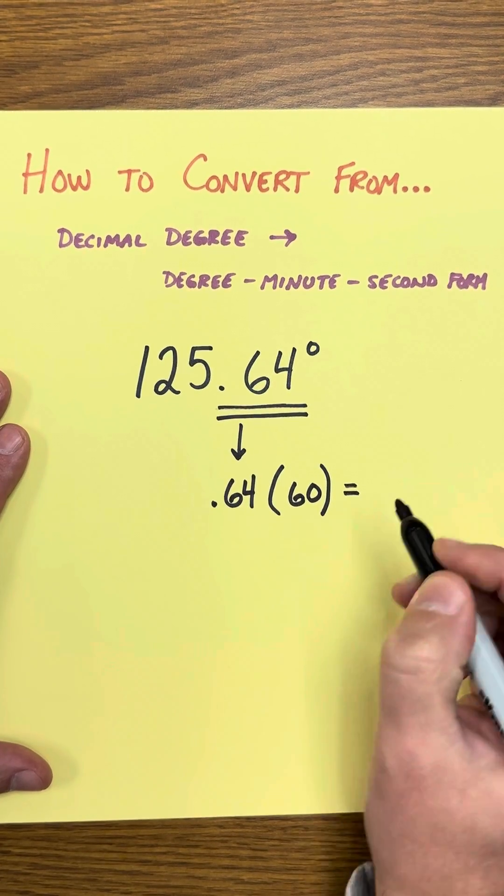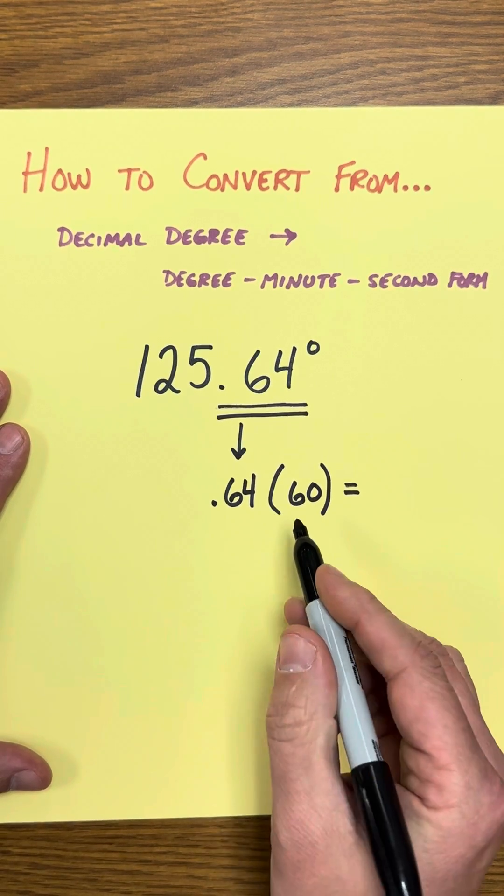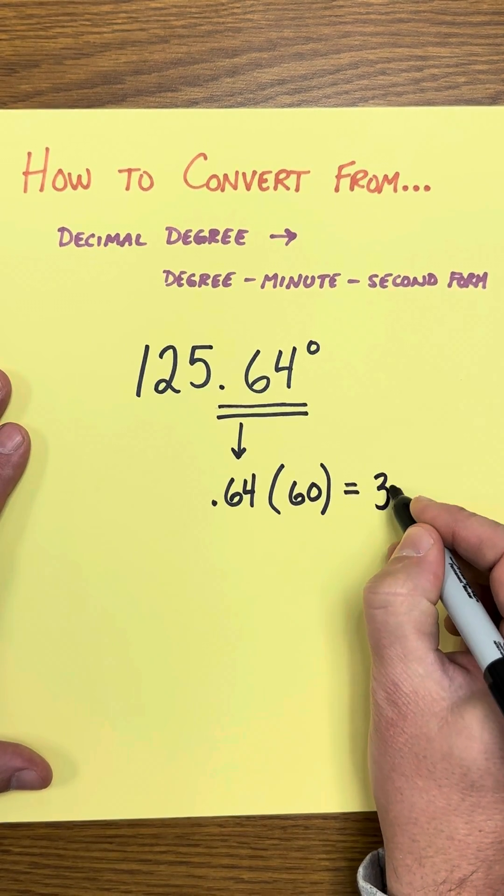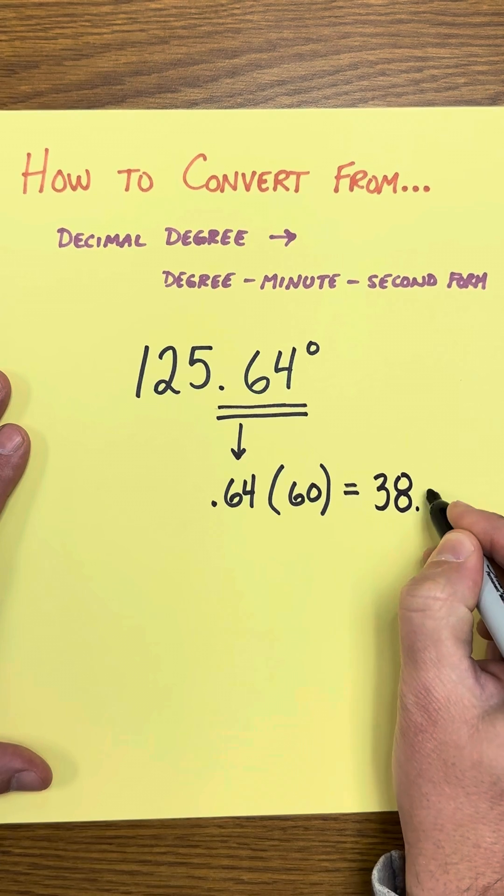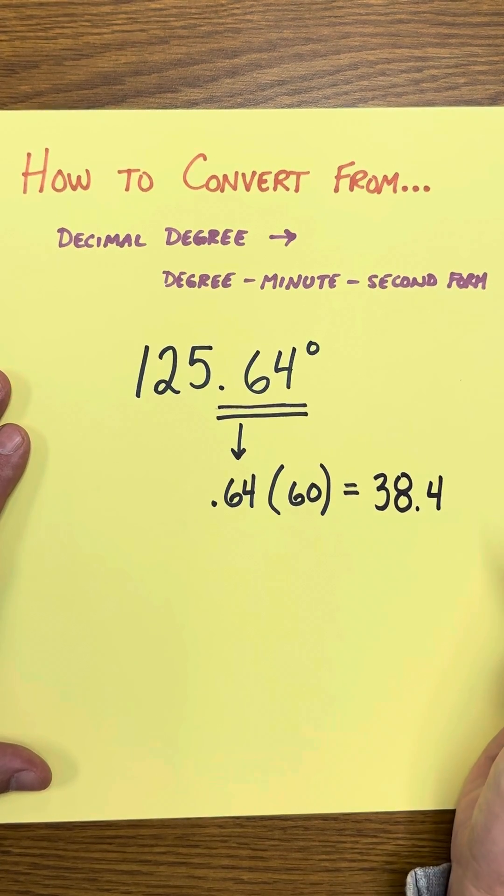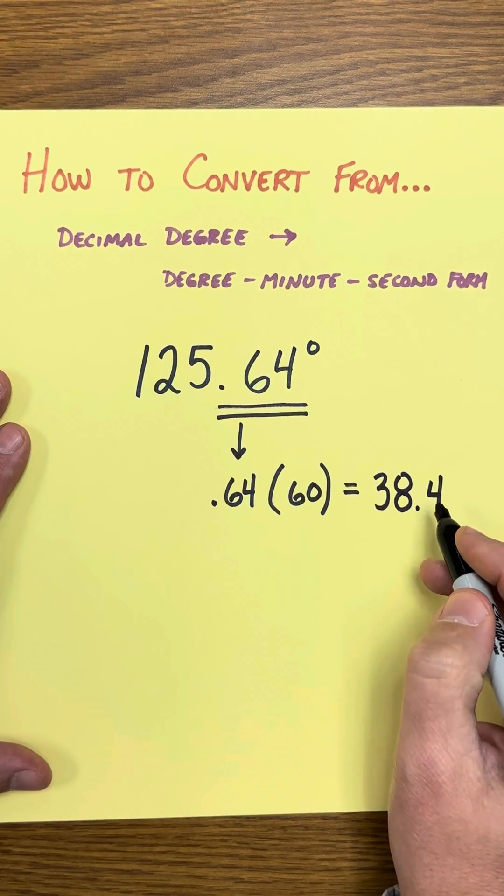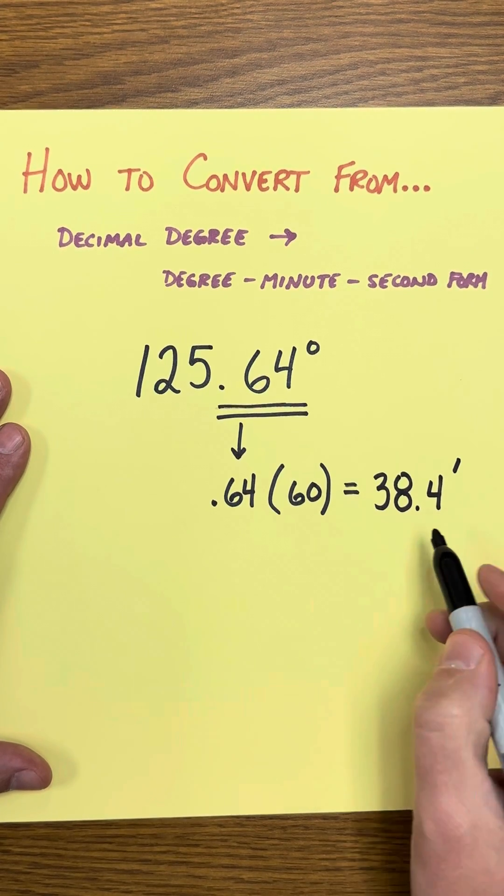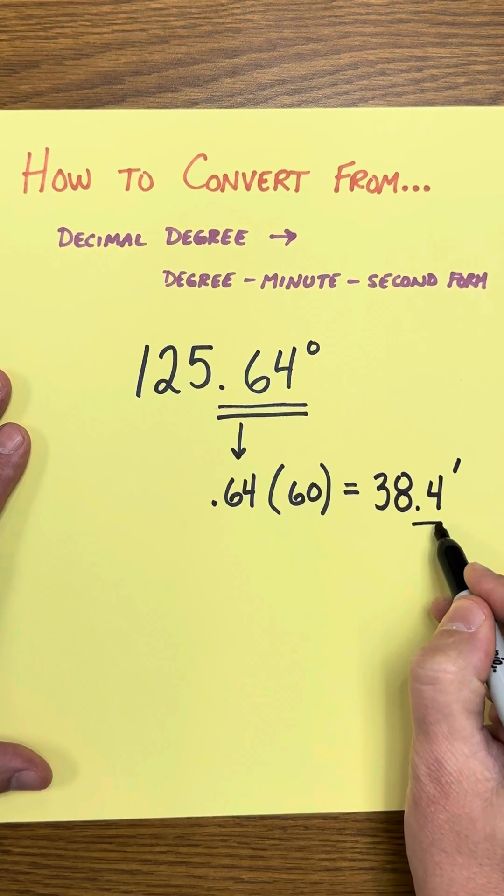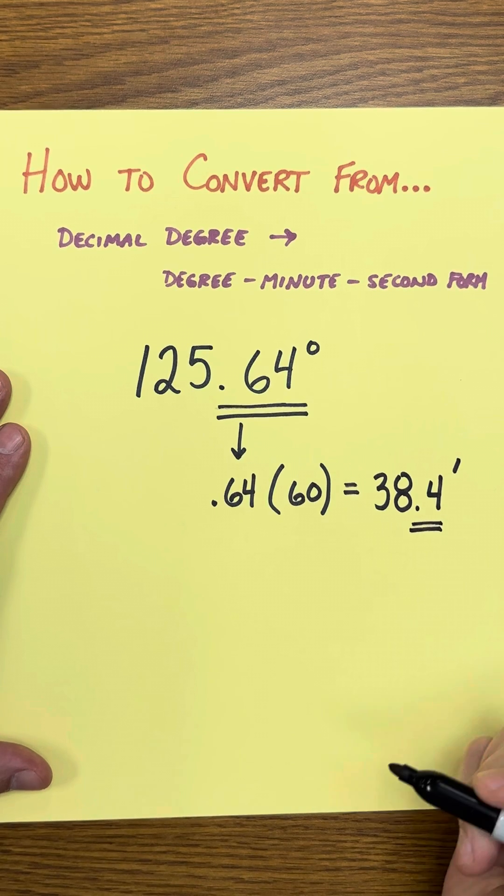So if I use my calculator to multiply 0.64 times 60 we get 38.4. That's 38.4 minutes but I don't really want the 0.4 of a minute.